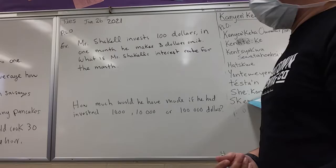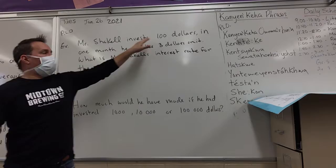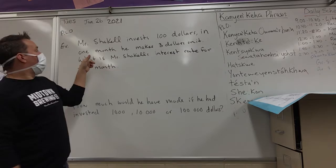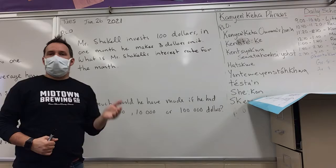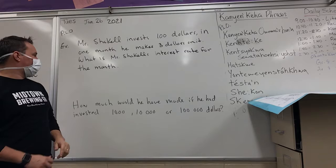It's kind of like a two-part question, but we're going to go through it. Mr. Shakel invests a hundred dollars — he's taking a hundred dollars of his hard-earned money and he's going to invest it for one month. In the one month, he makes three dollars on it. So he invests it and his hundred dollars now becomes a hundred and three dollars. What is Mr. Shakel's interest rate for the month?